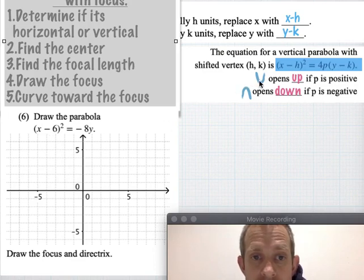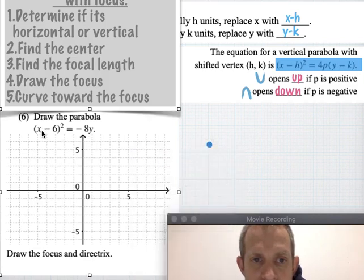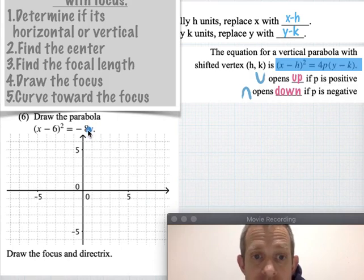And so to find the center, we'll take a look at what makes this a zero and what makes this a zero. Six makes this a zero. And so it's going to have an x coordinate of six. y doesn't have a chunk, right? It's not parentheses. It's not a group. And so if y was just zero, that would make it a zero. And so (6, 0) is the vertex in this place.